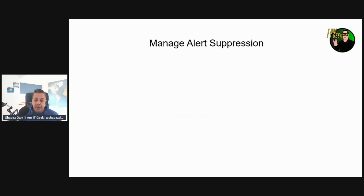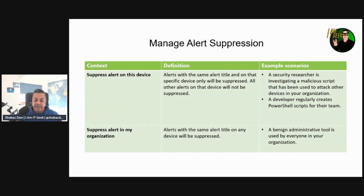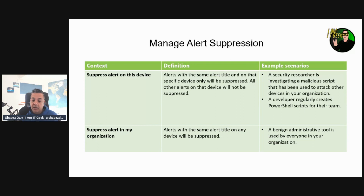Let's talk about managing alert suppression. You can create suppression rules for specific alerts known to be innocuous, such as known tools or processes in your organization. Looking at the suppression contexts — the first is suppressing alerts on a specific device, meaning alerts with the same alert title on that specified device will be suppressed, while all other alerts on that device remain active. Example scenarios include a security researcher investigating a malicious script used to attack other devices, or a developer regularly creating PowerShell scripts for their team.